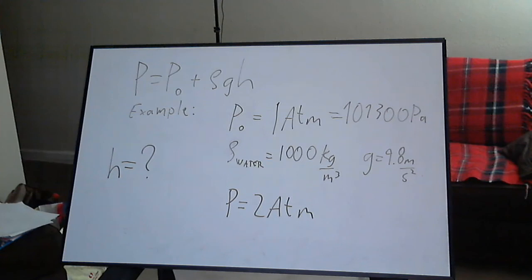The density of water we will approximate as that of pure water at 1000 kilograms per cubic meter. G is of course 9.8 meters per second squared. And the pressure level we are interested in is 2 atmospheres.